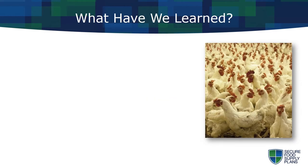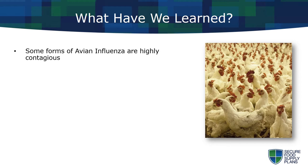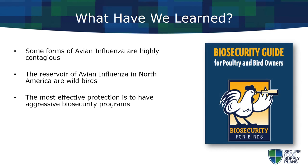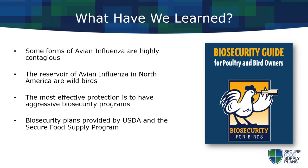So let's review what we've learned about avian influenza. Some forms of avian influenza are highly contagious — a high-pathogenicity strain can rapidly spread and kill entire domestic poultry flocks in a matter of days. The reservoir of avian influenza in North America is wild birds, particularly migrating waterfowl, who may not exhibit any signs of the disease. The most effective protection poultry owners can take is to have aggressive biosecurity programs. Interested producers can find guidance through programs provided by USDA and the Secure Food Supply Program.